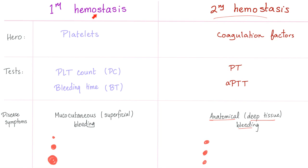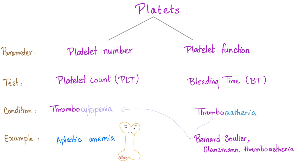Primary hemostasis end result: a platelet plug. Secondary hemostasis end result: a fibrin thrombus — stronger than the platelet plug. We need to go from primary to secondary for a fibrin thrombus. Platelets: number tested by platelet count, function tested by bleeding time. Conditions: thrombocytopenia is decreased platelet count; thrombosthenia is decreased platelet function — examples include aplastic anemia, Bernard-Soulier, and Glanzmann's thrombosthenia.